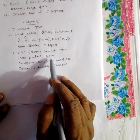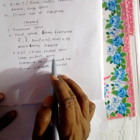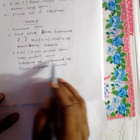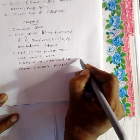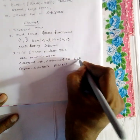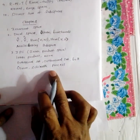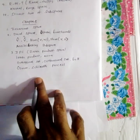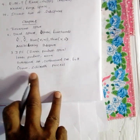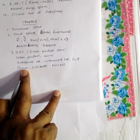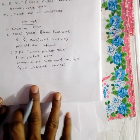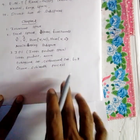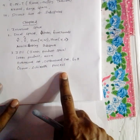The inner product induces norms. Then the orthonormal set, which is a linearly independent set — that's the important thing. Gram-Schmidt orthogonalization process is very important. There is a vector space where there is a basis; the basis is converted to an orthonormal set. So that's the Gram-Schmidt process and the concept of Chapter 2.